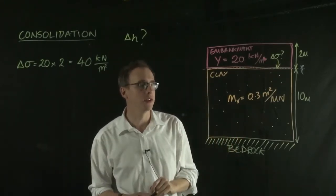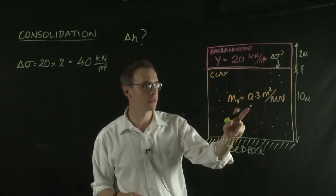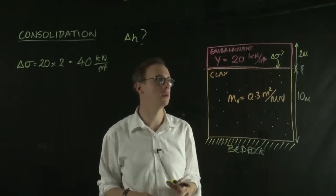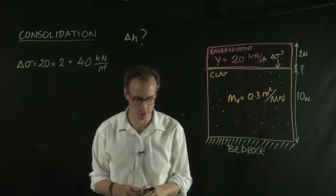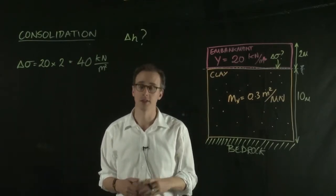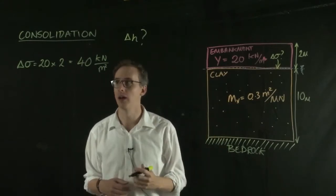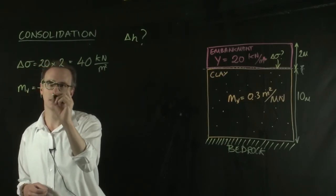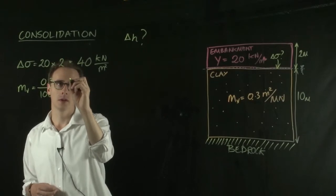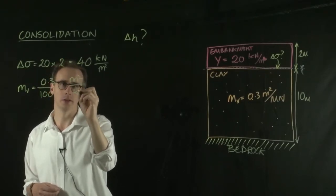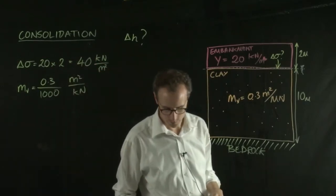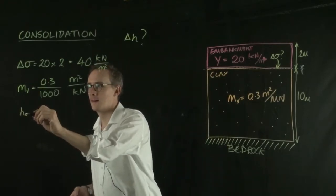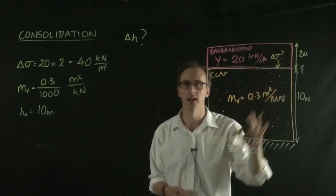The next thing we need to do is convert this MV value into units that are the same as our stress value. They're currently in meters squared per meganewton and we need to convert them into meters squared per kilonewton. To do that, we take our MV value and divide it by 1000. So MV equals 0.3 divided by 1000 meters squared per kilonewton. And initial height, H0, is equal to 10 meters, the initial thickness of the clay layer.